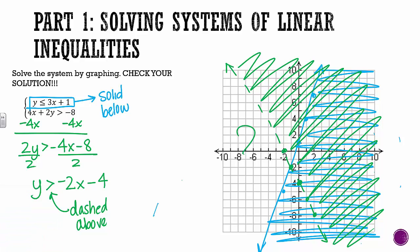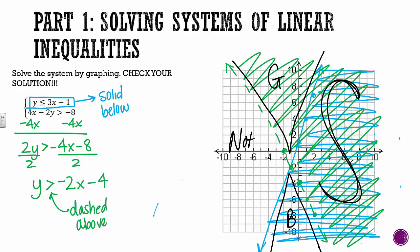This part over here with nothing. There's no solutions. It doesn't work in either equation. Up in this little triangle up here, this just works for the green equation. Down here, this stuff just works for the blue one. But our solutions that work in this system is this big region right here.